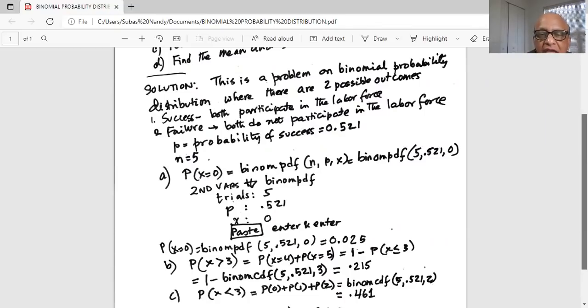Now we do second vars. Okay. And you scroll down to binom cdf, not pdf anymore. Why? Because you are interested to check out the probabilities of zero, one, two, and three. C stands for cumulative. You are going to add those four probabilities together. Therefore, instead of using binom pdf, you are going to use binom cdf.